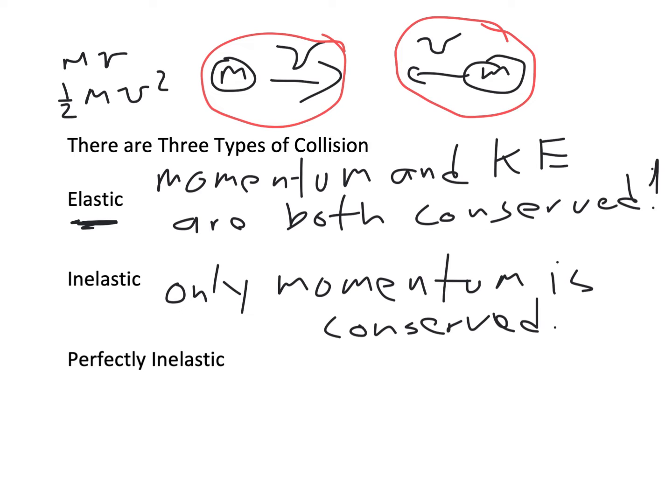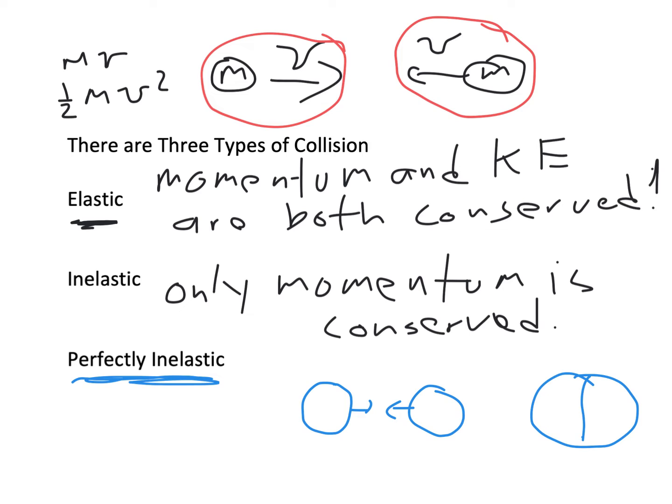There's a special case called a perfectly inelastic collision. That's when two things collide and they stick together. Imagine two balls of clay thrown towards one another — when they stick, you end up with one big lump of clay going off at some velocity. The two objects sticking together guarantees it must be an inelastic collision. You don't even have to check — you know the momentum is going to be conserved, but the kinetic energy is not. That's why they call it a perfectly inelastic collision.